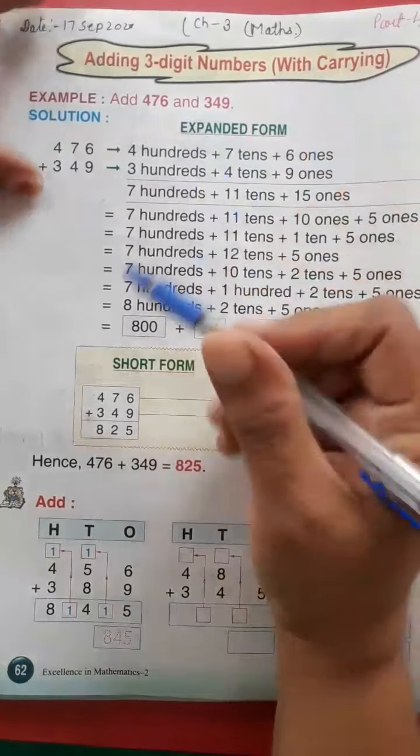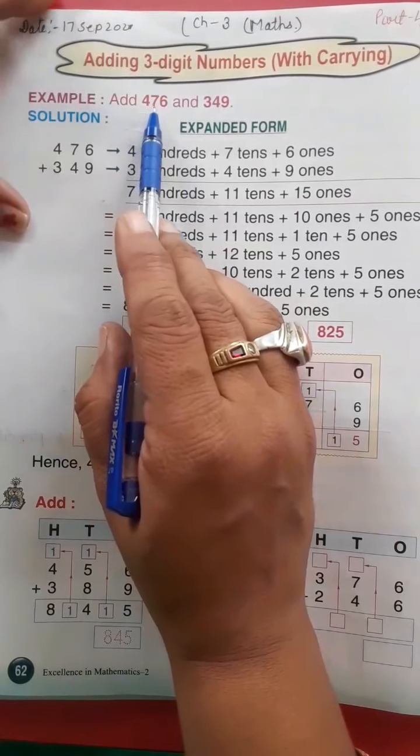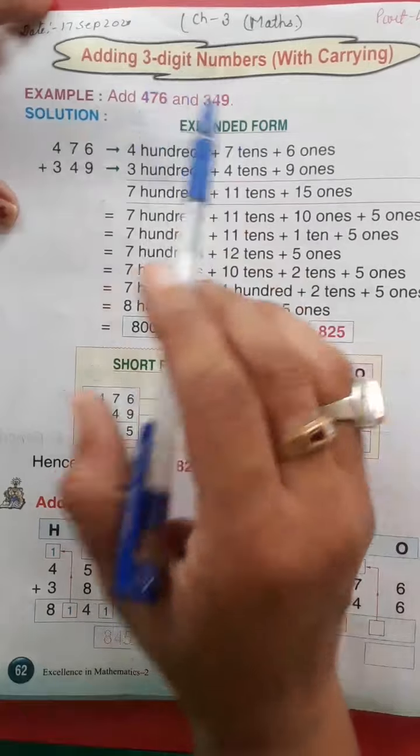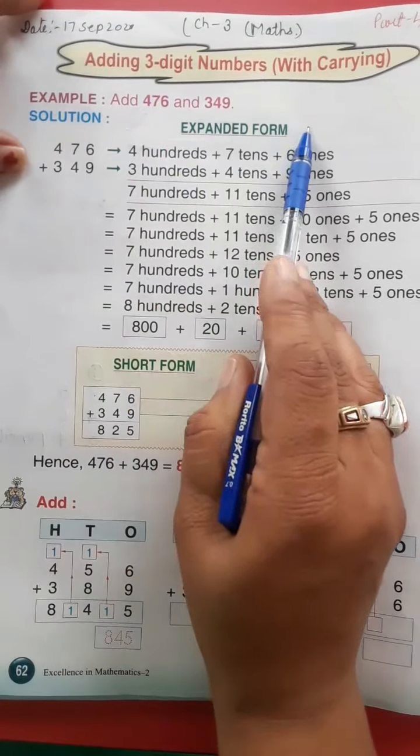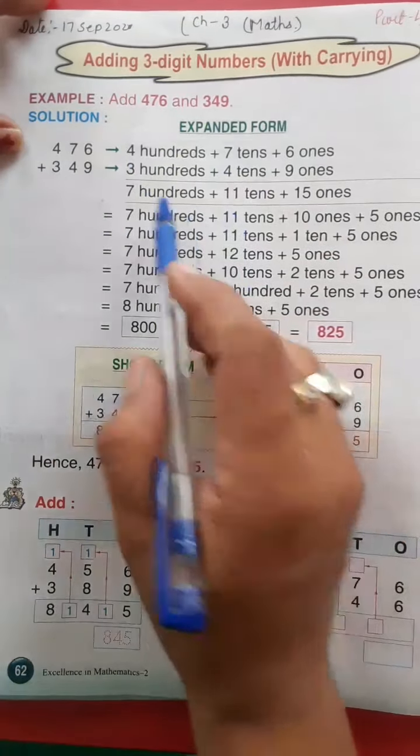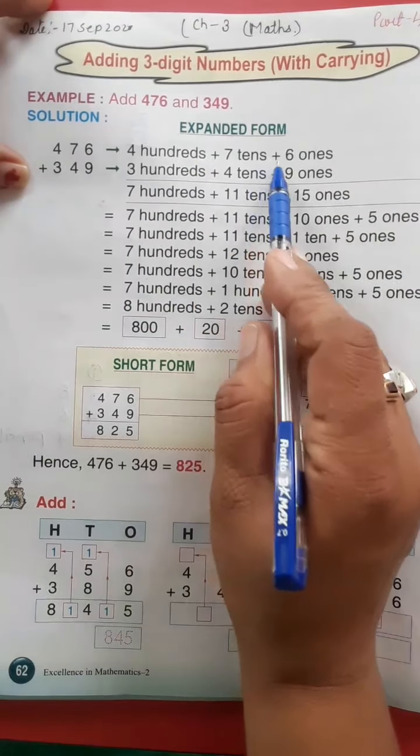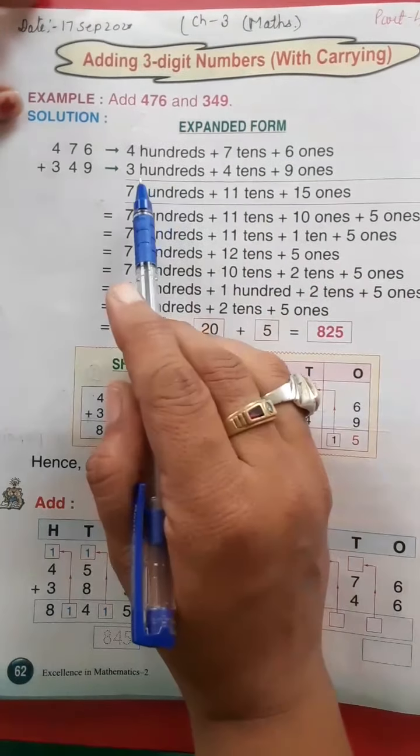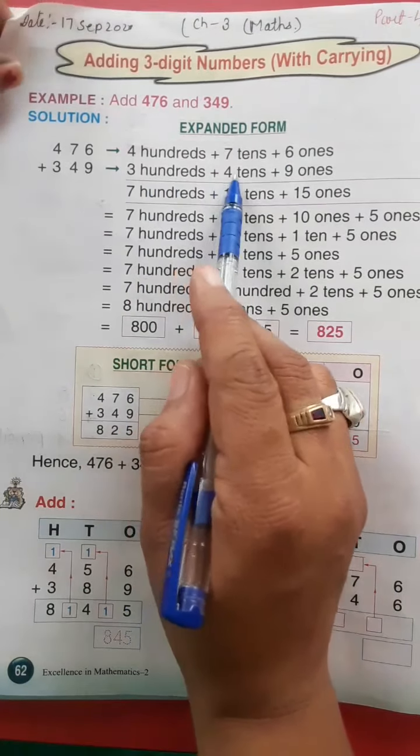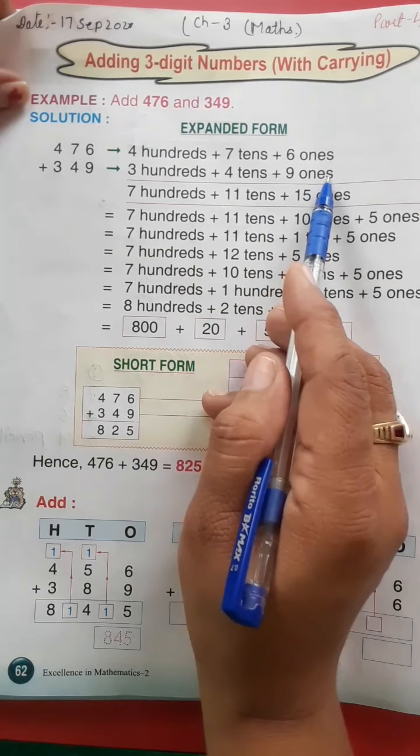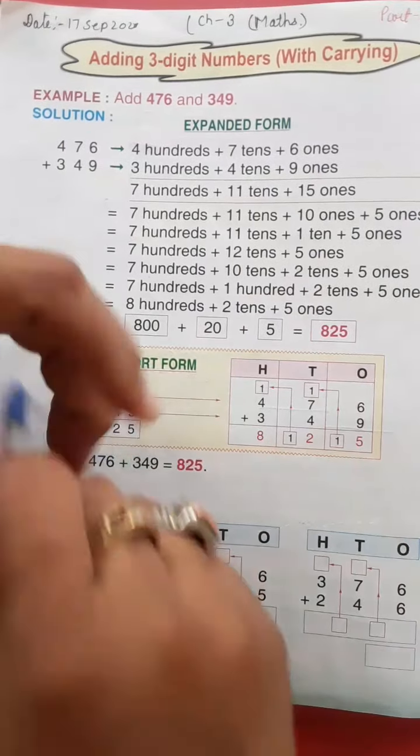Add 476 and 349. Solution: ham isko expand form me kaise karenge, to 400 plus seven tens plus six ones, usi tariqe se 300 plus four tens plus nine ones. Okay, to ab six or nine combine karte hai.